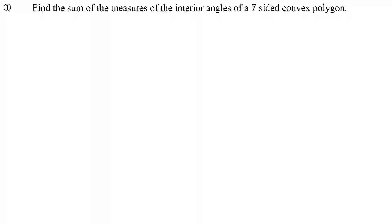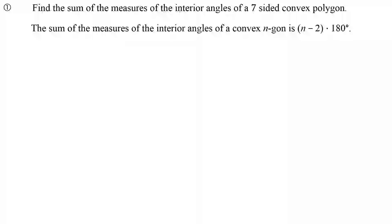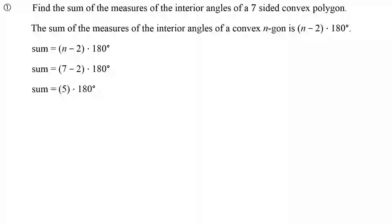Question number one. We know that for any type of polygon, if there are n sides, we have n minus 2 times 180 degrees for the total measurement. So, if we're looking at a seven-sided polygon, the sum of the interior angles will be 7 subtract 2 times 180 degrees. 7 subtract 2 is 5. 5 times 180 — we might need a calculator — comes out to be 900. So, the answer for this question would be 900 degrees.